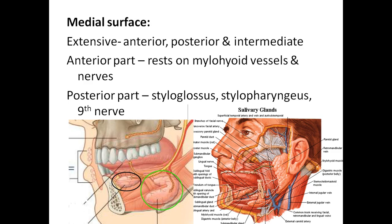The medial surface is more extensive than the lateral surface and is explained in three portions: anterior, intermediate, and posterior. The anterior portion rests on the mylohyoid muscle, and is therefore related to the nerve and vessels going to the mylohyoid — the mylohyoid nerve (nerve to mylohyoid) and mylohyoid vessels.